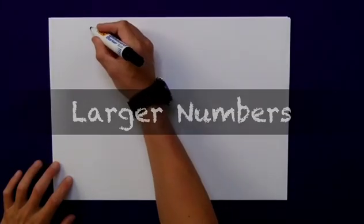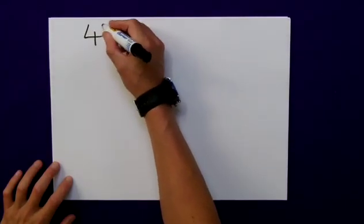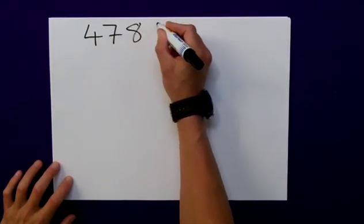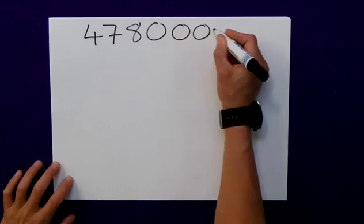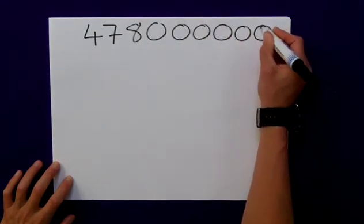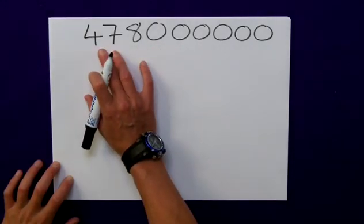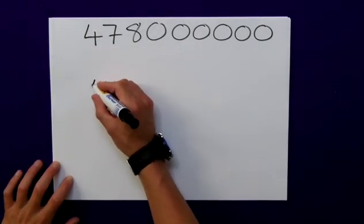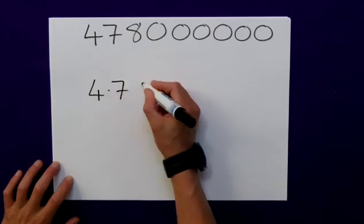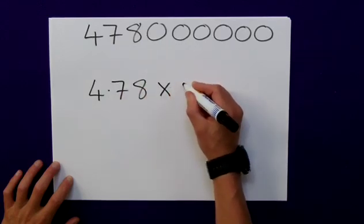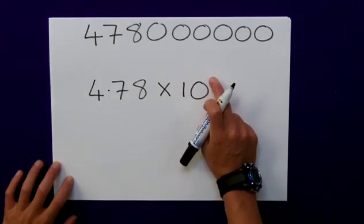Let's now apply that theory to a much larger number. Let's take 478 million written in standard index form. I'm going to show you a cheat way of doing this. The same principle applies - the number has to be between 1 and 10. I would start with 4.78. I then must multiply it by 10. Now it's the indice which is the important part.